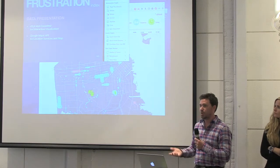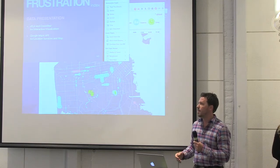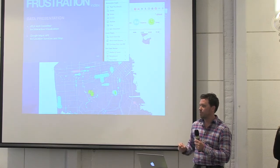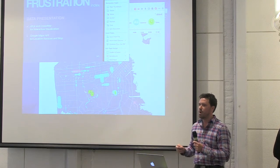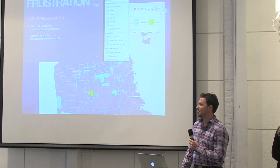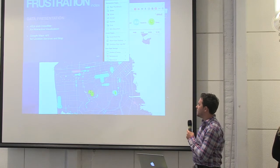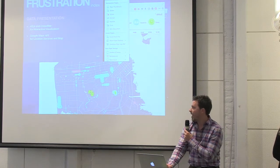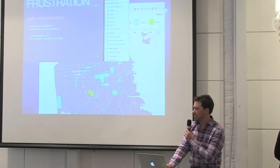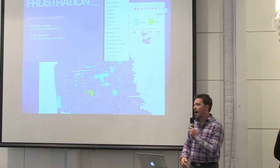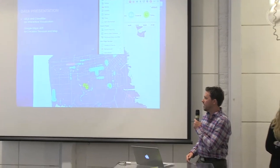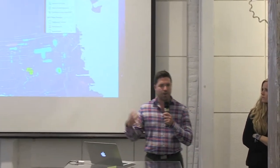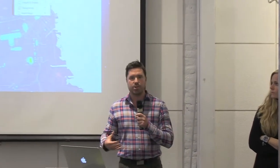D3 is pretty good, and Crossfilter added performance so we could do a bit more without crashing the browser. For all the points and vectors we used D3, but we also used the Google Maps API for the background map and the Google Maps service for location data. The Google Maps API is really great for this kind of work.